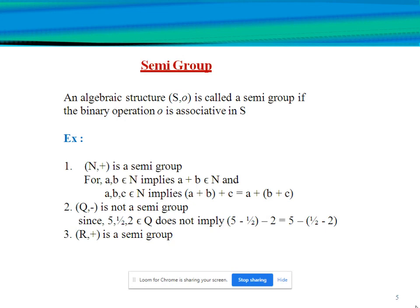The second example: (Q, −) is not a semi group, since for 5, 1/2, 2 belonging to Q, 5−(1/2−2) does not equal (5−1/2)−2. The third example: (R, +) is a semi group.